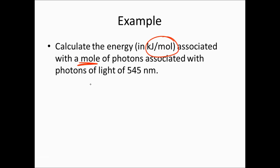To do this, we first need to find the energy per photon. The energy per photon is given by hc over lambda, since we know the wavelength.